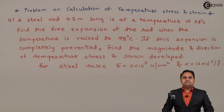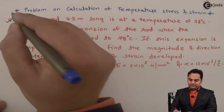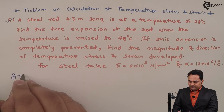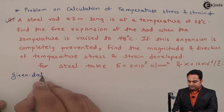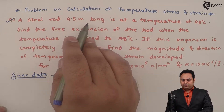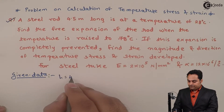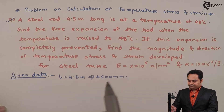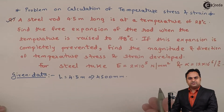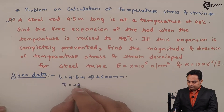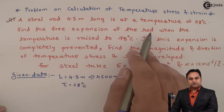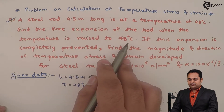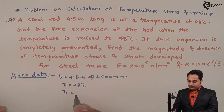Hello friends, in this video we will see the problem on temperature stress and strain. The data given is: a steel rod 4500 mm long is at an initial temperature of 28 degrees Celsius. We need to find the free expansion of the rod when the temperature is raised to 78 degrees Celsius.